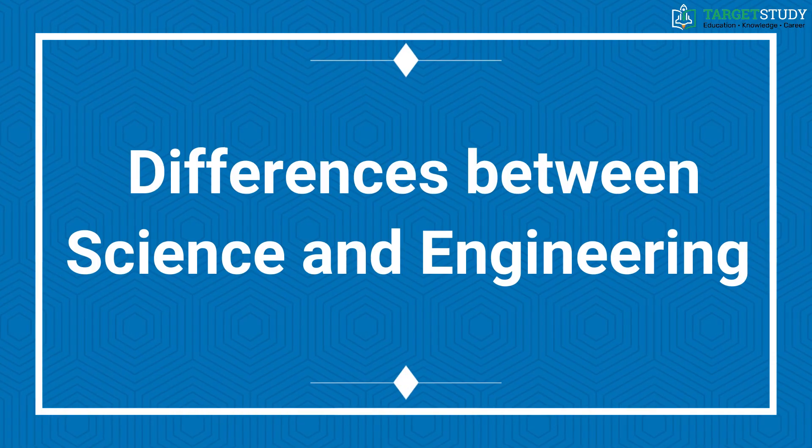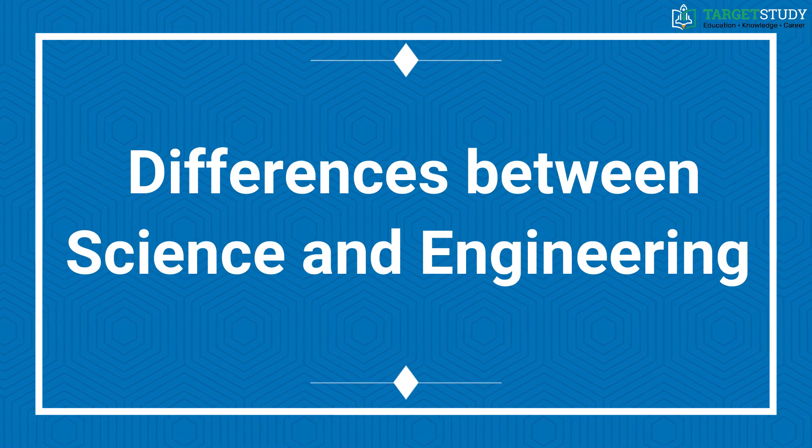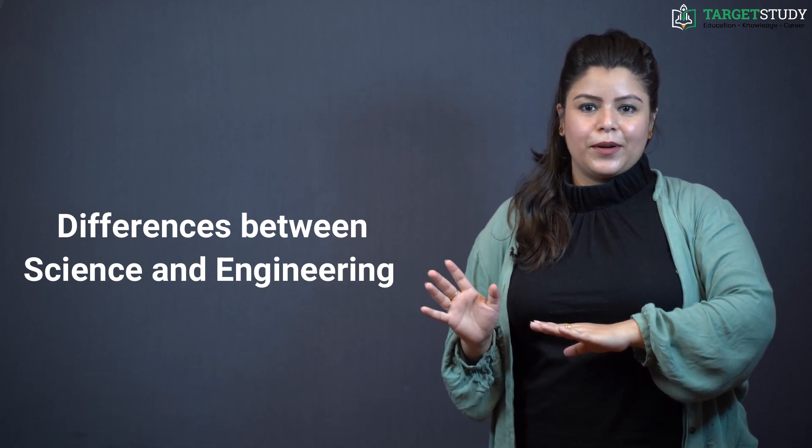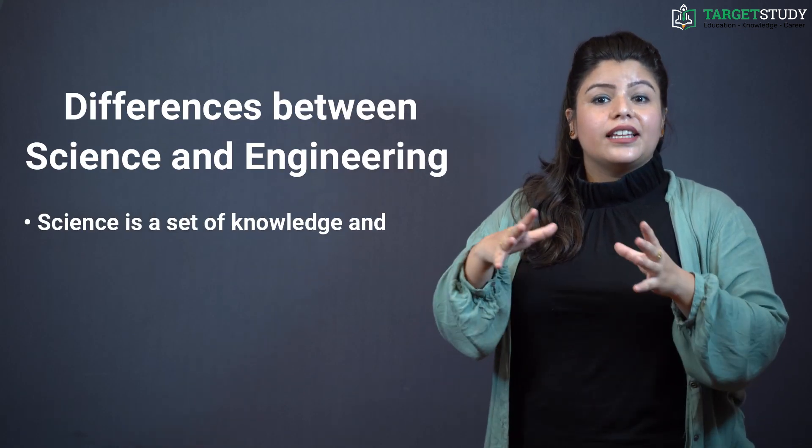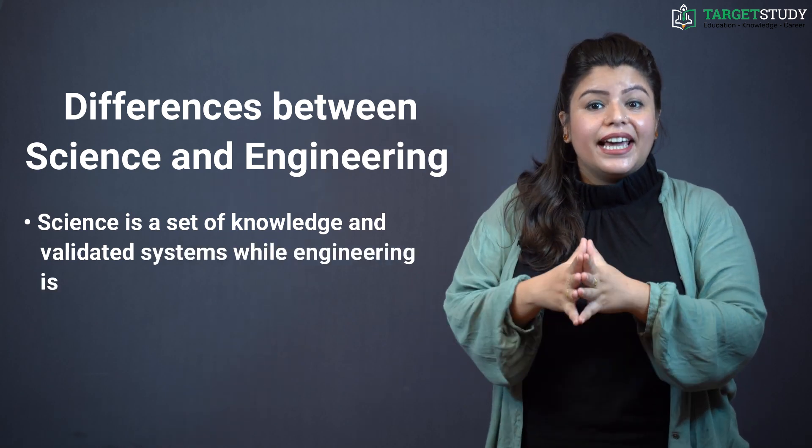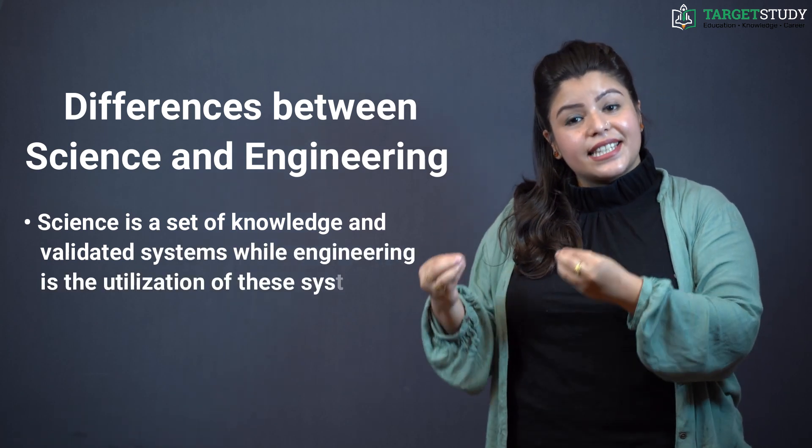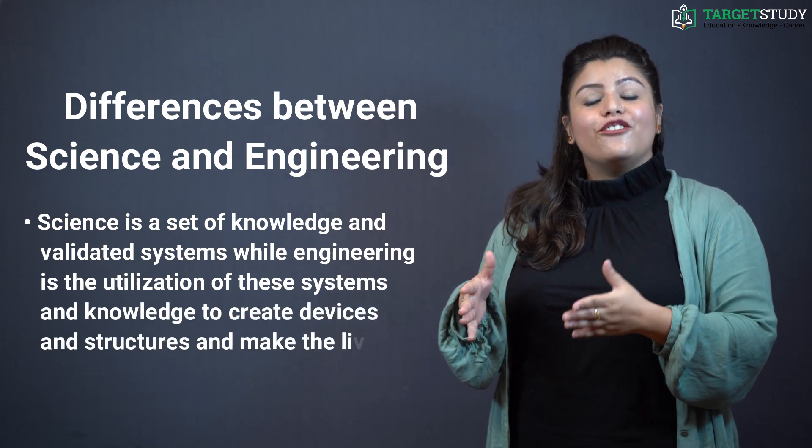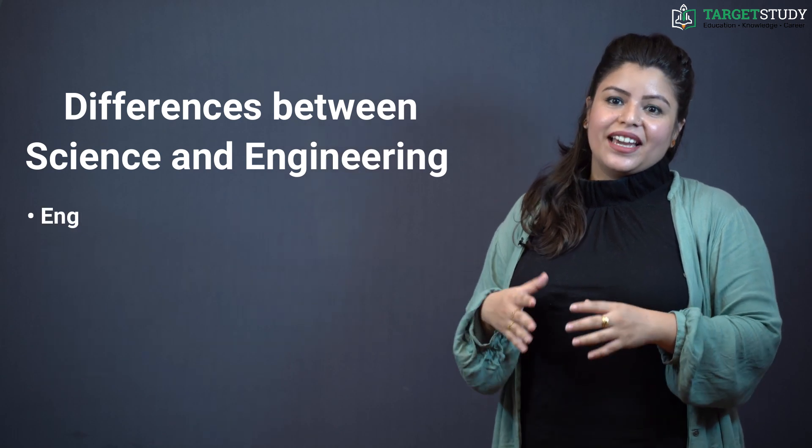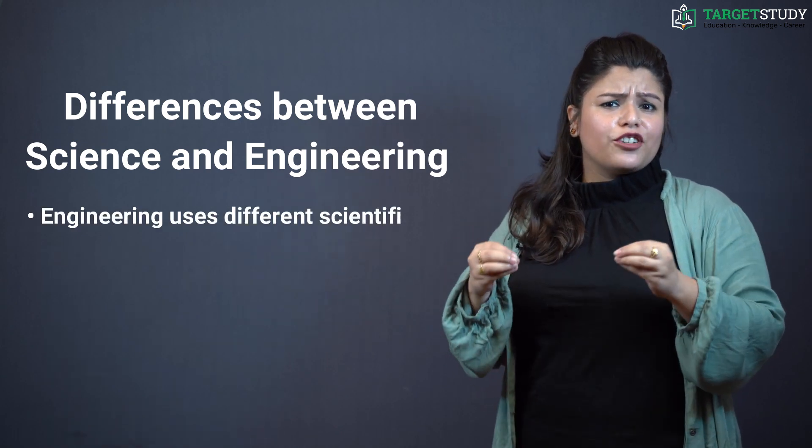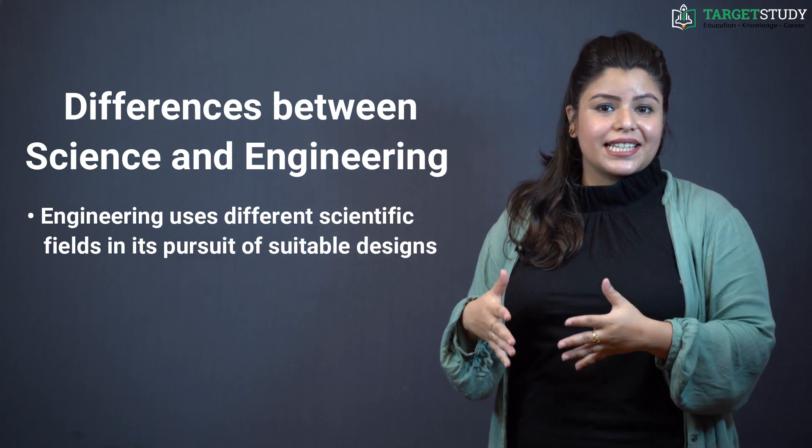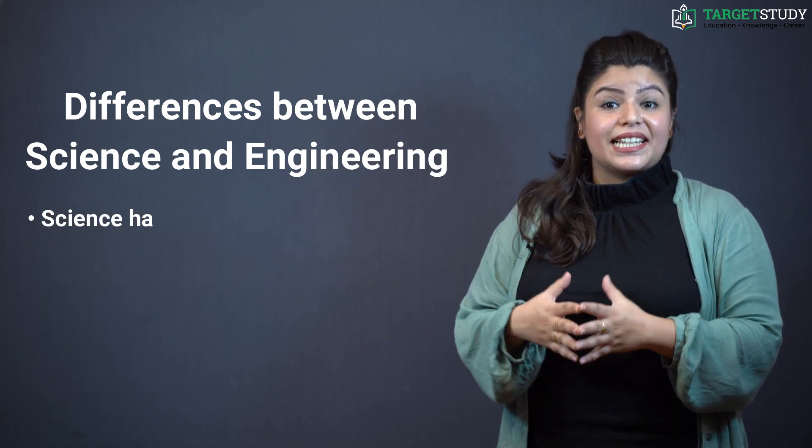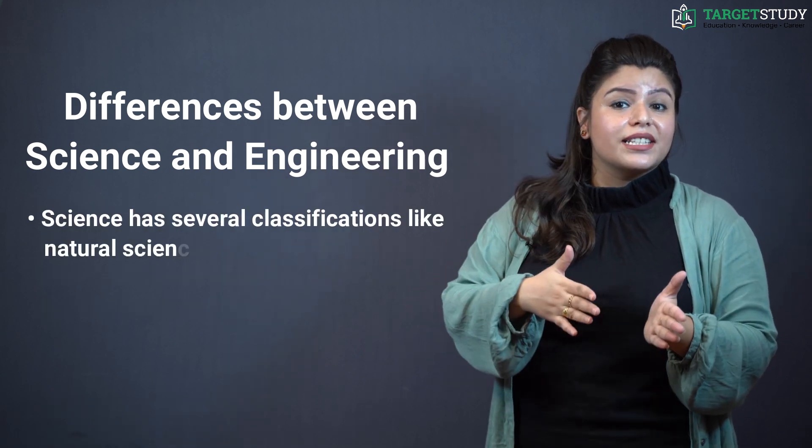Now I would like to tell you differences between science and engineering. There are some aspects which differentiate science and engineering. Science is a set of knowledge and validated systems while engineering is utilization of these systems. It is also the knowledge to create devices and structures which make the living standards comfortable. Engineering uses different scientific fields in its pursuit of suitable designs and methods of producing devices for the benefits of man.